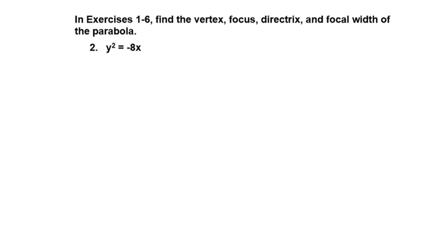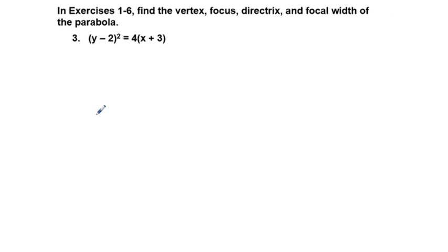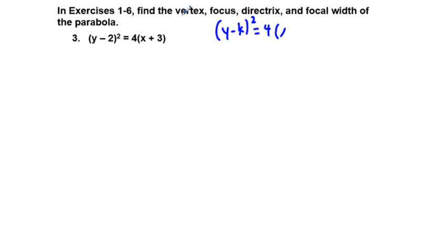Next, problem number 3. Here we have a vertex, and what we have is Y minus 2 and X plus 3, which will move a parabola up or down. This is going to be in the form (Y minus K) squared equals 4P(X minus H). The vertex is going to be found by looking at H and K. Since we have plus 3, H has to be negative 3, because it's like minus negative 3.